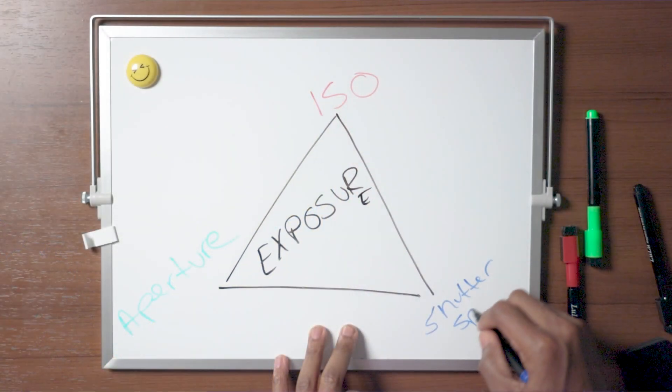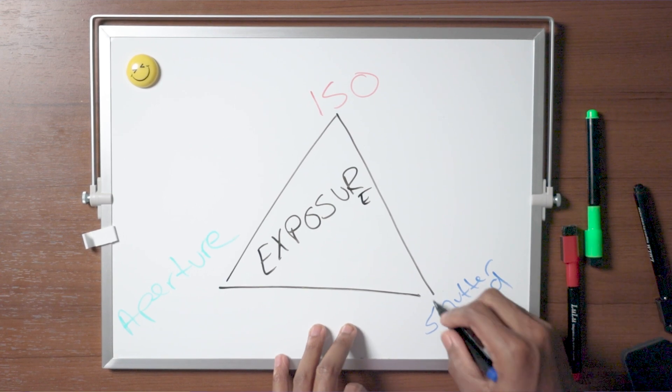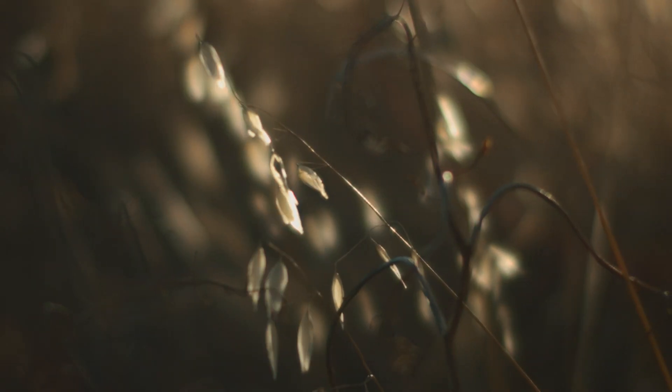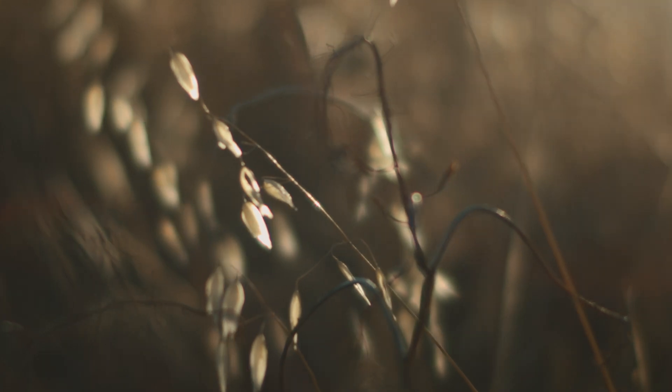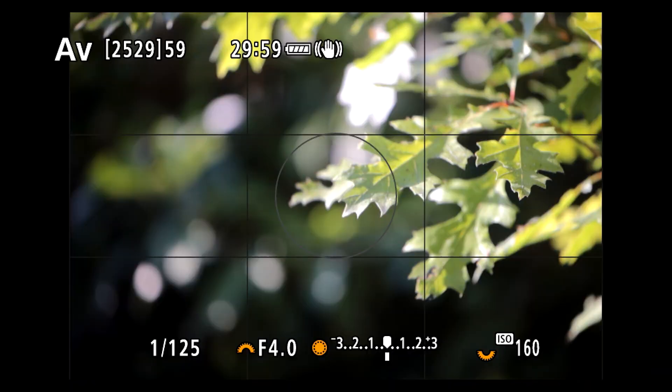If you want to understand how ISO, shutter speed, and aperture are all related, check out this video where I talk about how the exposure triangle works and how you can use all three together to create the images that you want.